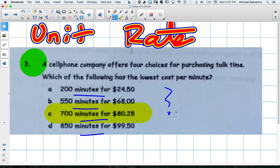So let's read it again and really try to understand this. A cell phone company offers four choices for purchasing talk time. I'm assuming the talk time is in minutes. Which of the following has the lowest cost per minute? Okay, so obviously here's our cost. There's our dollar amounts, and these are our minutes. These are our time amounts.